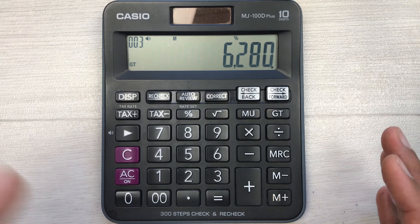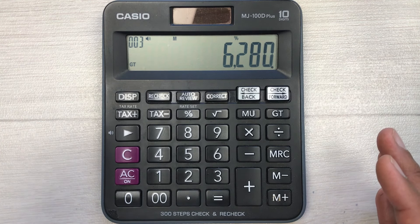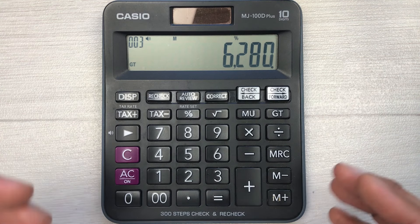This is the fastest way you can find out the 20% discount. Let's move to another example.